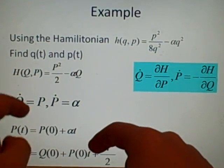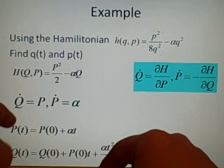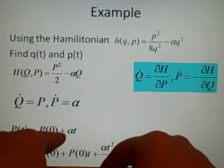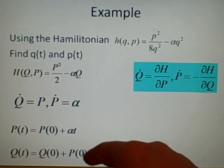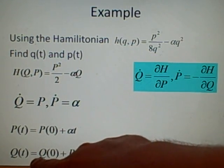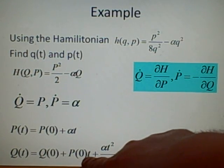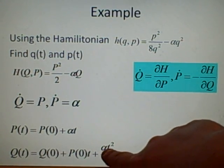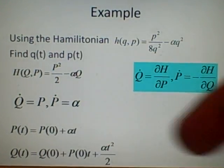And now we can substitute this value, which we have for P, into here, so Q dot will be equal to P nought plus alpha t. And we integrate this, so we have Q zero plus P nought times t plus alpha t squared over 2. And that's the Hamiltonian equations.